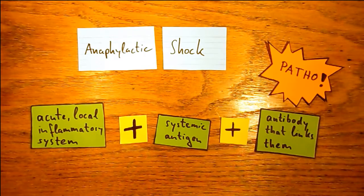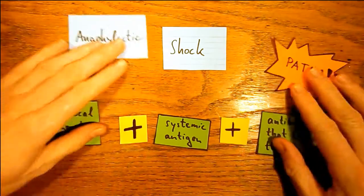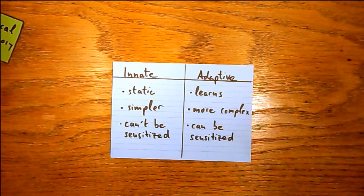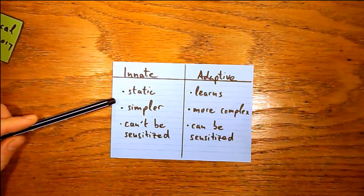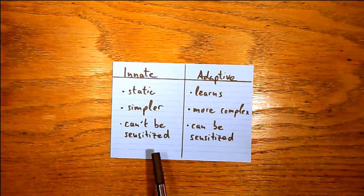Anaphylaxis is an over-the-top immune response to an allergen. Let's have a look at what an acute immune response is normally like. We have two immune systems that protect us against invading organisms: the innate one and the adaptive one. The innate system is simpler and doesn't learn from previous encounters with a pathogen. It only detects certain harmful patterns and then reacts the same way each time, so it can't be sensitized.